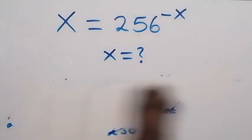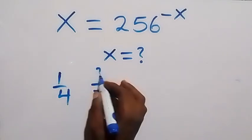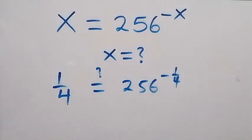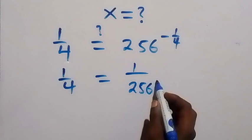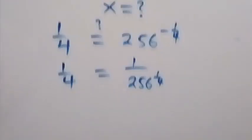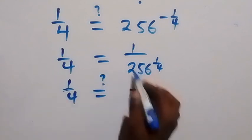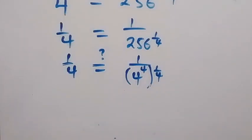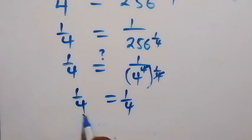To verify, we substitute x equals 1 over 4 back into the original equation: x equals 256 raised to the power of minus x. So 1 over 4 should equal 256 raised to the power of minus 1 over 4. From the law of indices, this is 1 over 256 raised to the power of 1 over 4. Writing 256 as 4 raised to the power of 4, and then raising to 1 over 4, the powers multiply: 4 times 1 over 4 equals 1, leaving 1 over 4. So we get 1 over 4 equals 1 over 4.